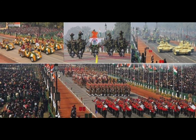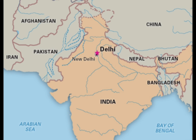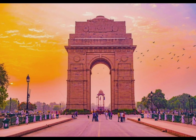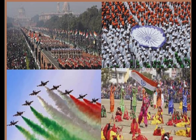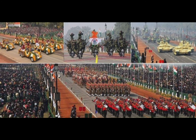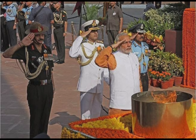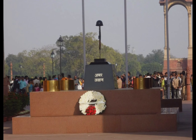Every year, a grand parade is held in the capital, New Delhi, commencing from the gates of Rashtrapati Bhavan on Rajpath, past the India Gate. The various regiments of the Indian Army, the Indian Navy, and the Indian Air Force perform their drill. On this day, the Prime Minister honours the martyrs by placing a wreath at India Gate's Amar Jawan Jyoti.